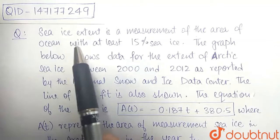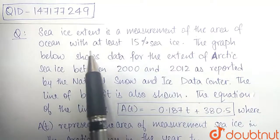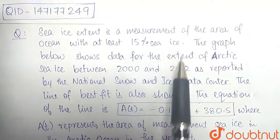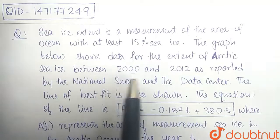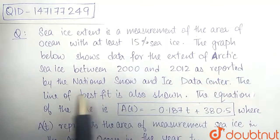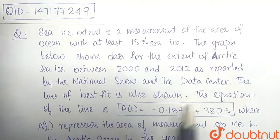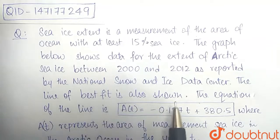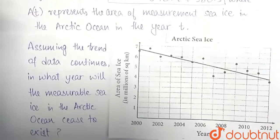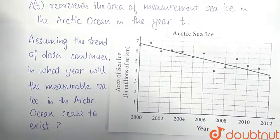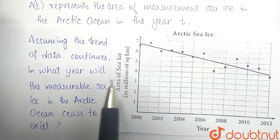The question here is, sea ice extent is a measurement of the area of ocean with at least 15% sea ice. The graph below shows data for the extent of Arctic sea ice between 2000 and 2012, as reported by the National Snow and Ice Data Center. The line of best fit is also shown. The equation of the line is A(t) = -0.187t + 380.5, where A(t) represents the area of measurement sea ice in the Arctic ocean in the year t.